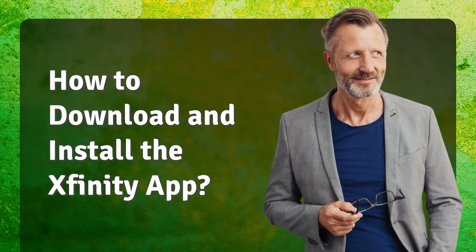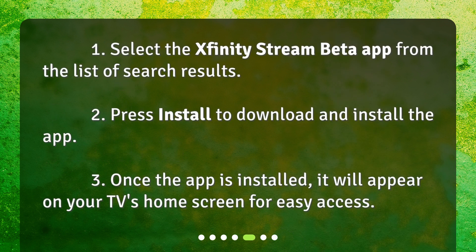To download and install the Xfinity app: 1. Select the Xfinity Stream beta app from the list of search results. 2. Press Install to download and install the app. 3. Once the app is installed, it will appear on your TV's home screen for easy access.